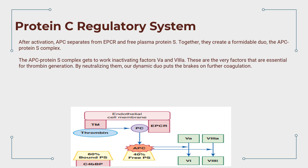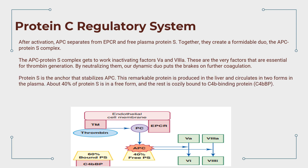The APC-Protein S complex gets to work inactivating factor Va and factor VIIIa — the very factors essential for thrombin generation. By neutralizing them, this dynamic duo puts the brakes on further coagulation. Protein S is the anchor that stabilizes APC.